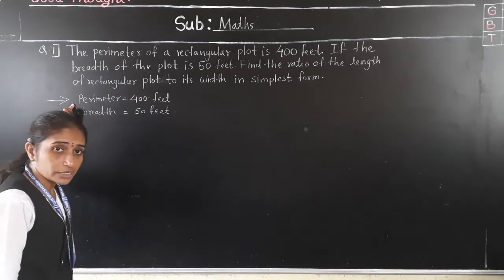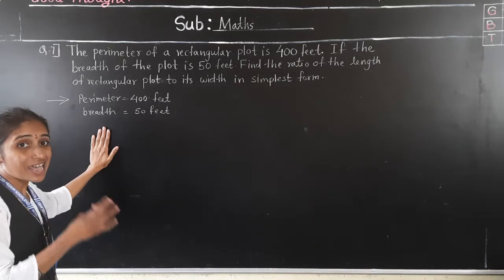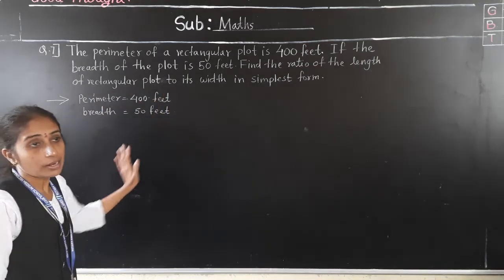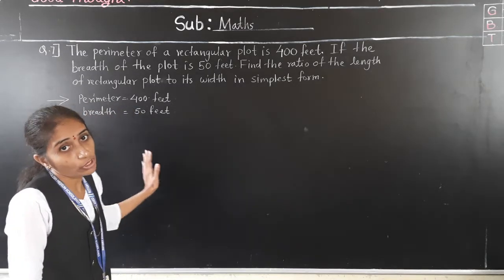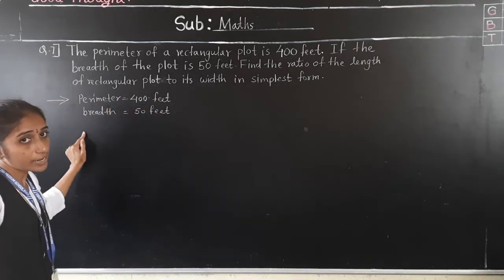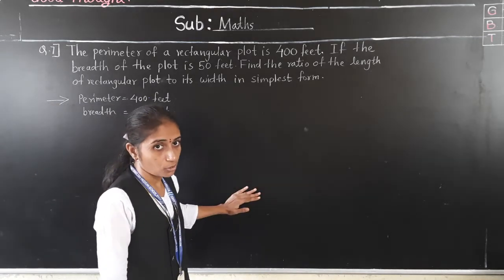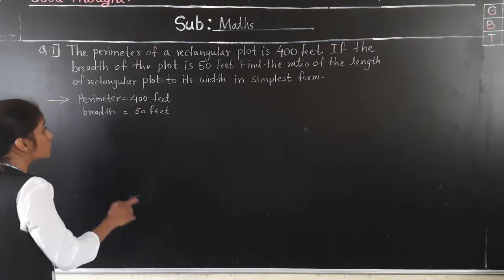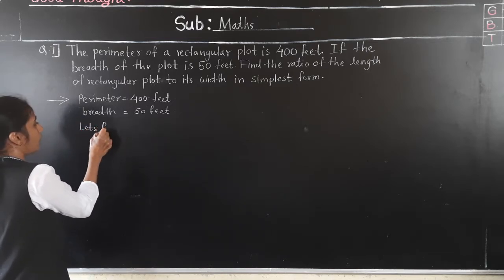Perimeter of the rectangular plot is given as 400 feet, and breadth is given as 50 feet. It is asked to find the ratio of length to breadth. But we don't know the length, so first we have to find the length.